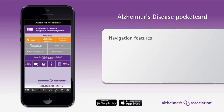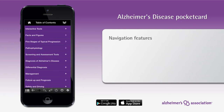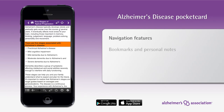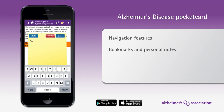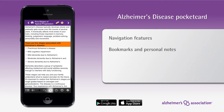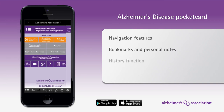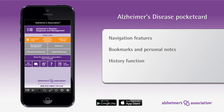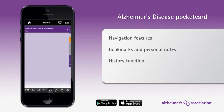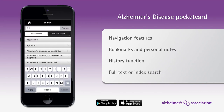Navigation features in the app make it easy to access the information or resource you need. Save your bookmarks and personal notes and find them any time you need them in the bottom navigation bar. Navigate through the app by using the history function — moving back and forward makes it easy to find your path. The full text or index search helps you quickly link to any item or topic of interest.